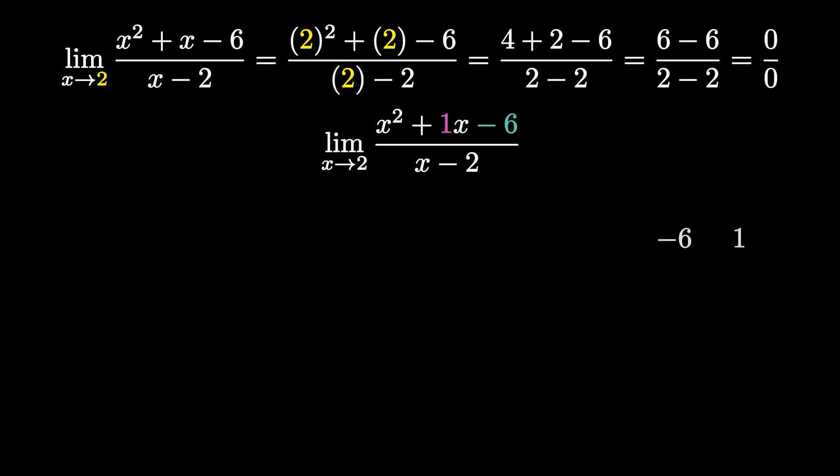Next we want to go down the line to see which pair adds to give us 1. With our first pair, negative 6 plus 1 is negative 5, so that doesn't work.